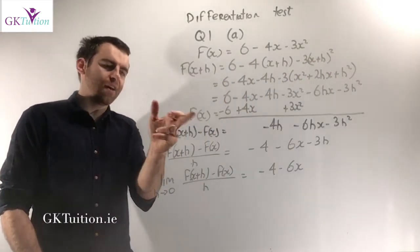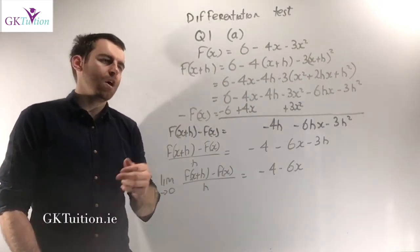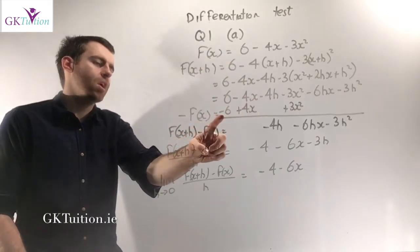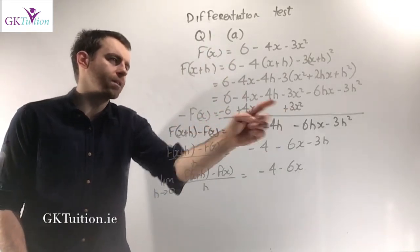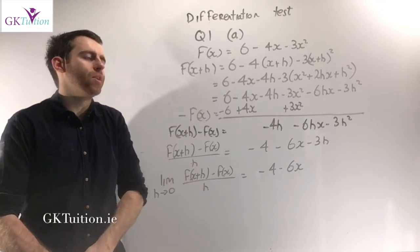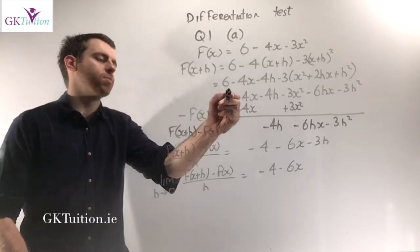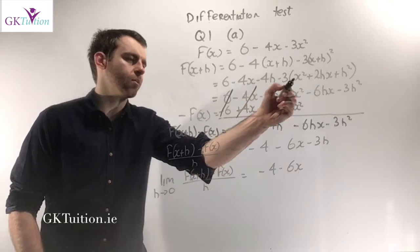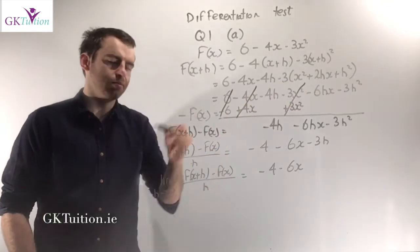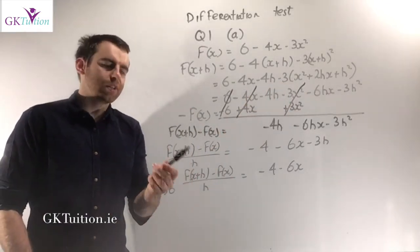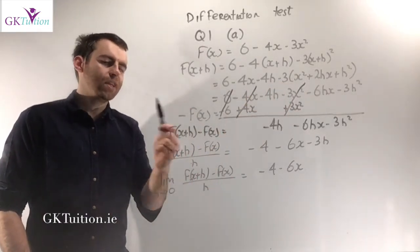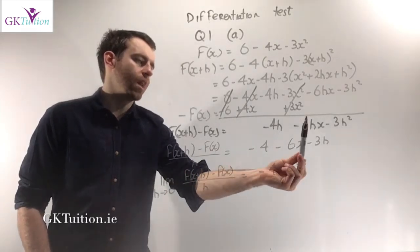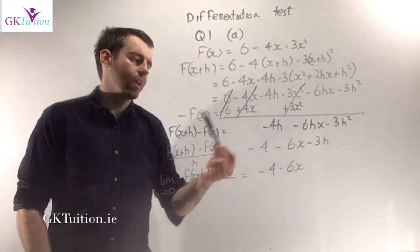Then you need to subtract f of x, which means you take your first line and change all the signs, giving minus 6 plus 4x plus 3x squared. The 6 terms cancel, these terms cancel, and these terms cancel. So f of x plus h minus f of x leaves me with minus 4h minus 6hx minus 3h squared.